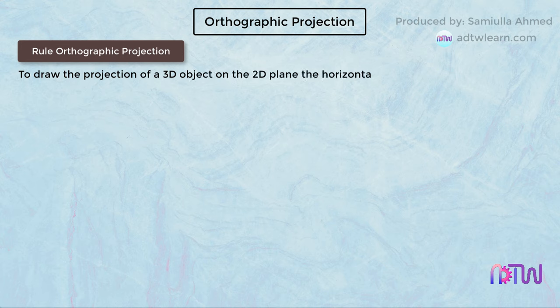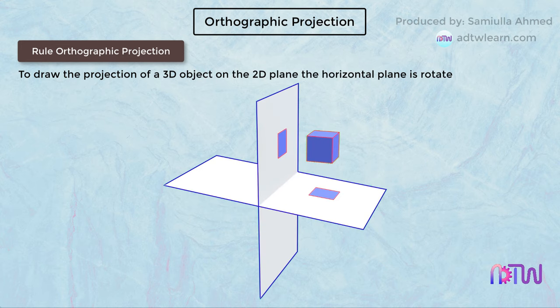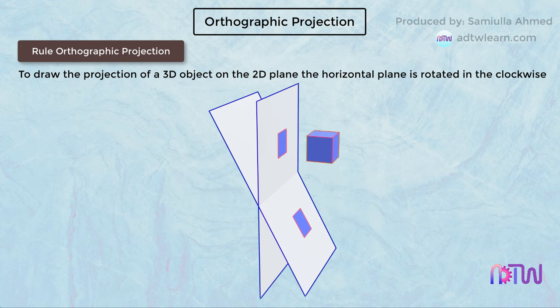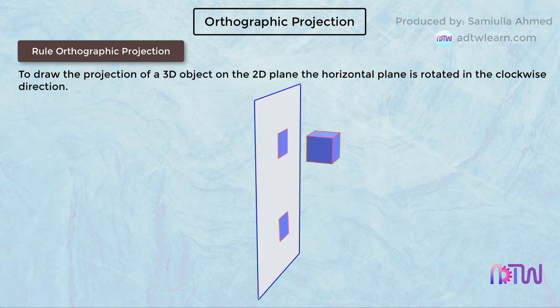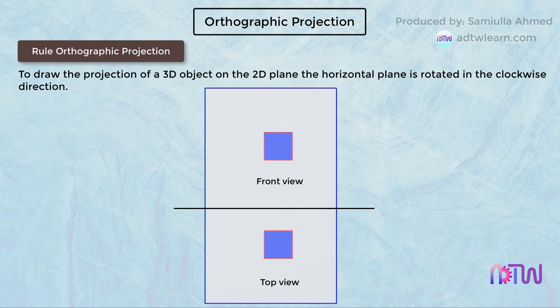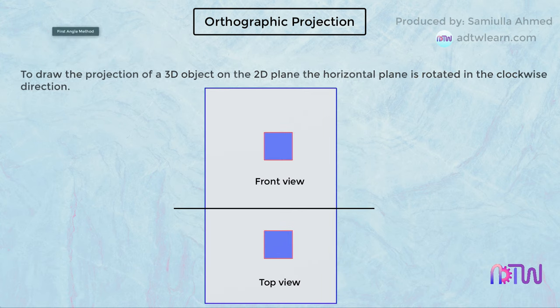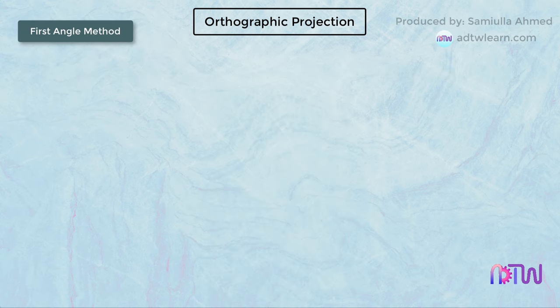According to the rule of orthographic projection, to draw the projection of a 3D object on the 2D plane, the horizontal plane is rotated in the clockwise direction.